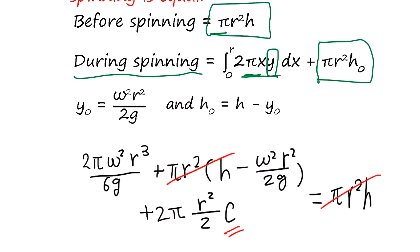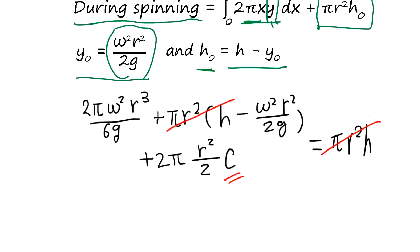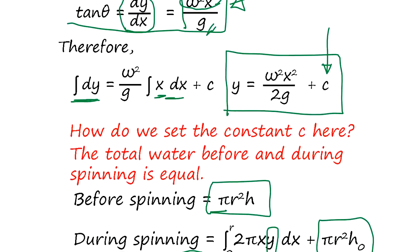So since y0 equals, y0 is this, and h0 is h minus y0, the integral. Y has c in it, so the c comes in. And we take integral, equate to this guy. And this term is going to go away, and we can determine c from here. Once we determine the c, then we get the complete equation here.